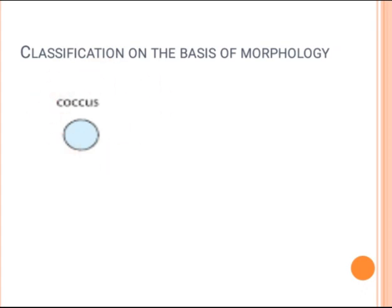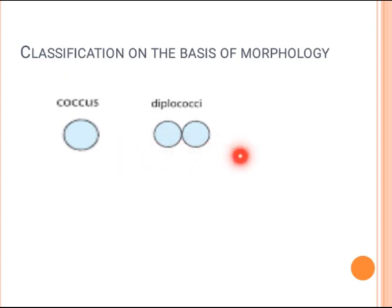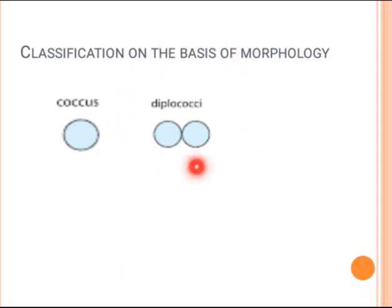We have single-plane cocci, two-plane cocci, or even three-plane cocci. Diplococci form when two cocci attach to each other, and diplococci is a single-plane cocci because it is present on a single plane. An example of diplococci is Neisseria.